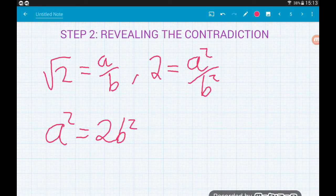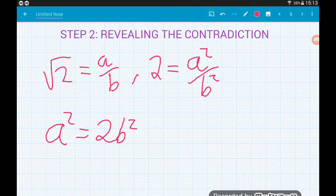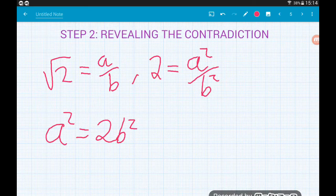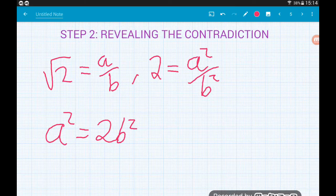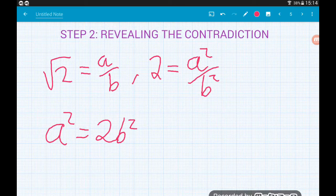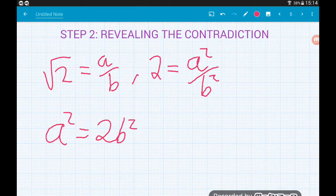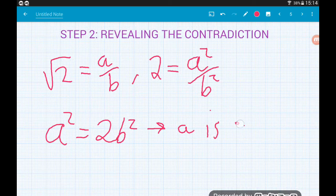Now then what does this mean? Any number being multiplied by 2 is an even number by the definition of evenness. So if a squared is equal to 2b squared, that means that a squared has to be even. Now if you have an even square number, the square root of it is always even. So this implies then that a is even.